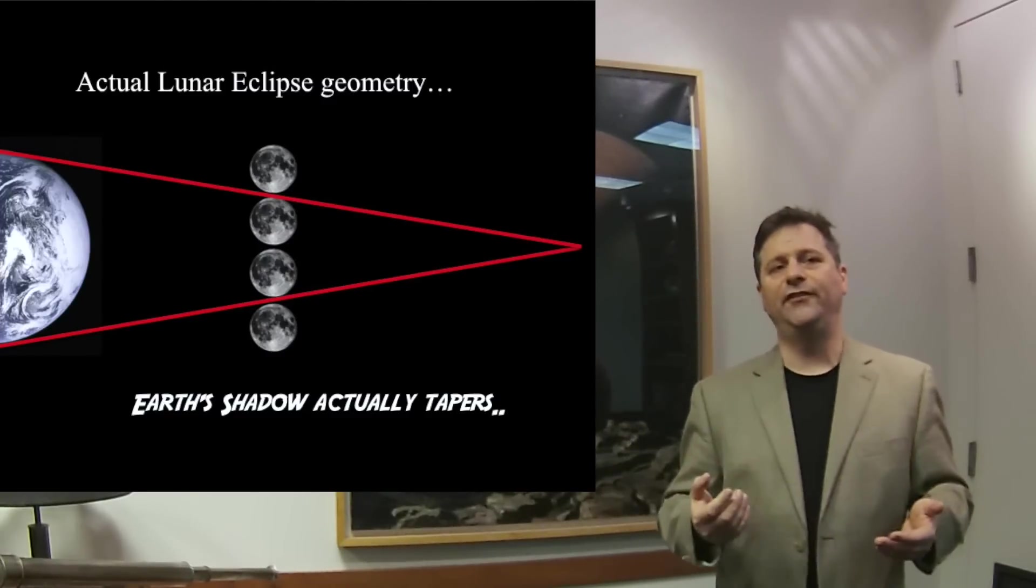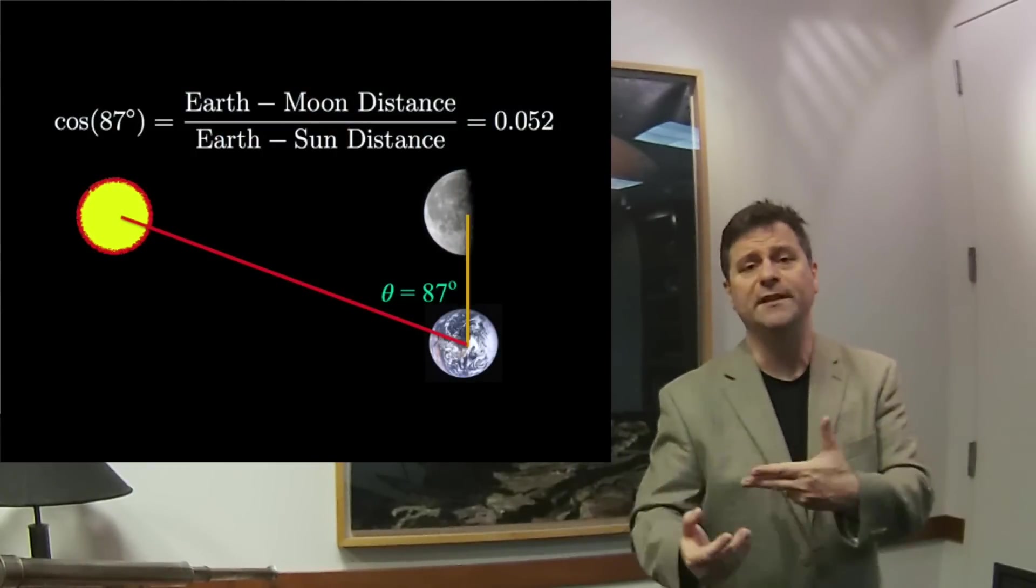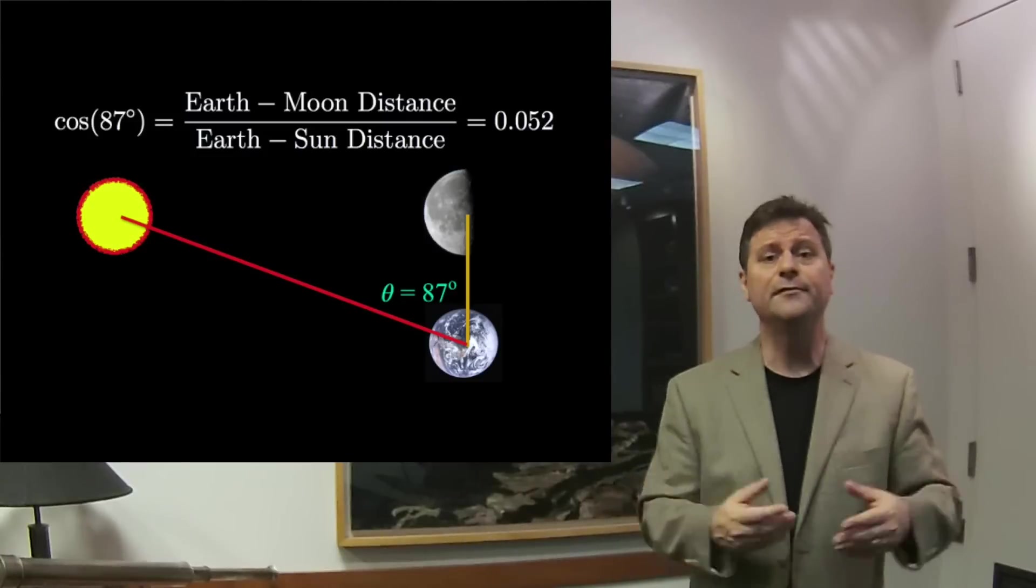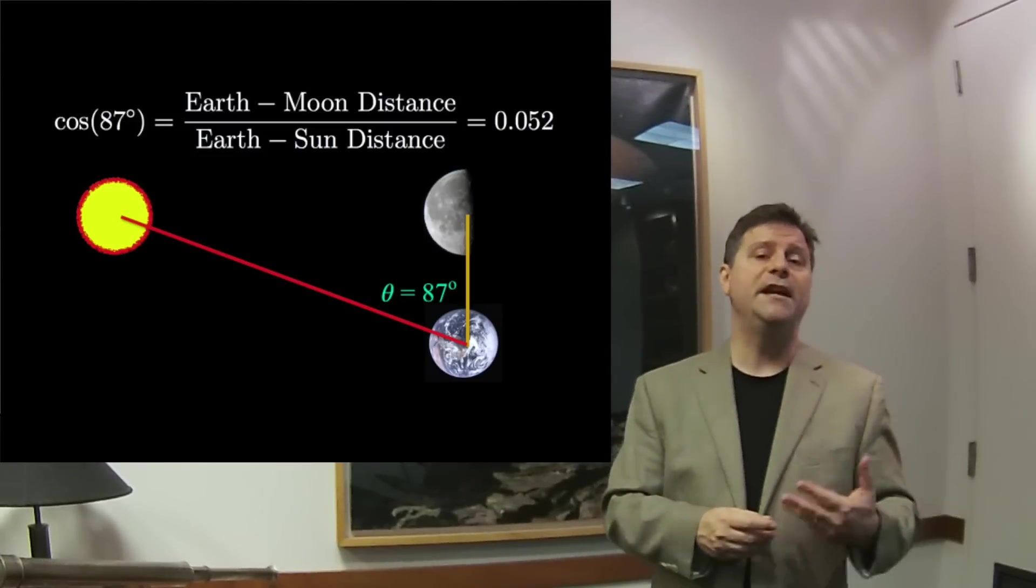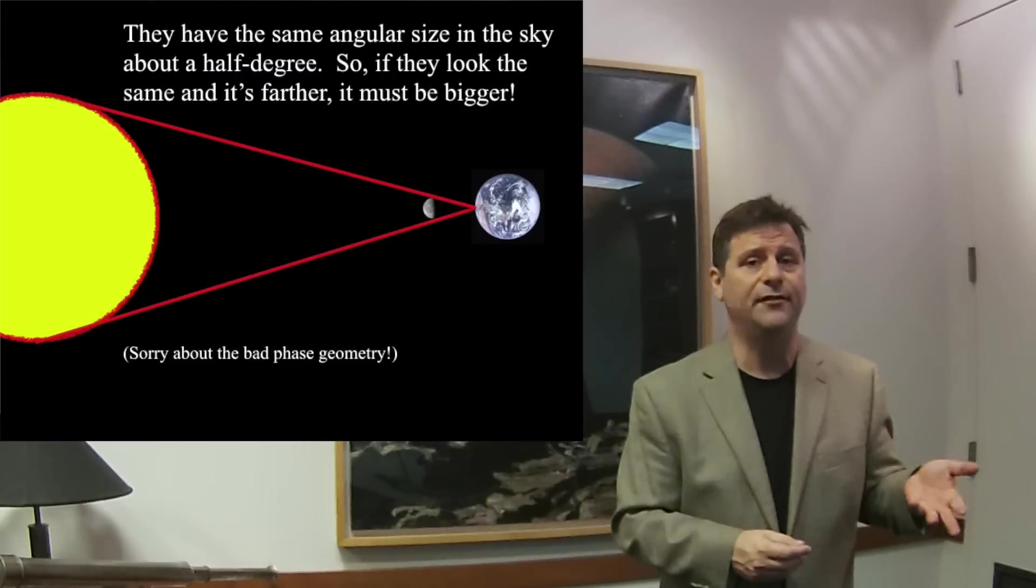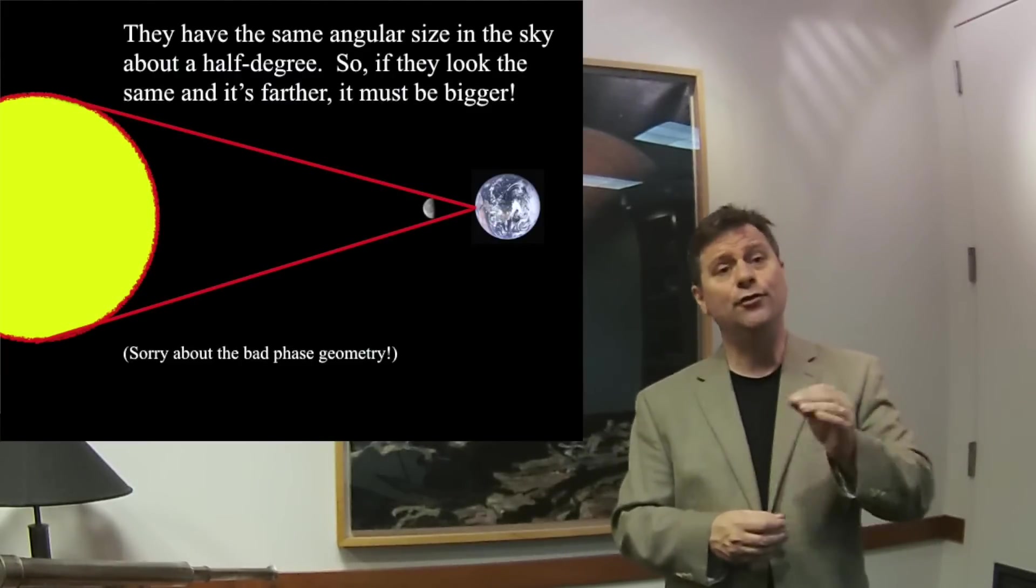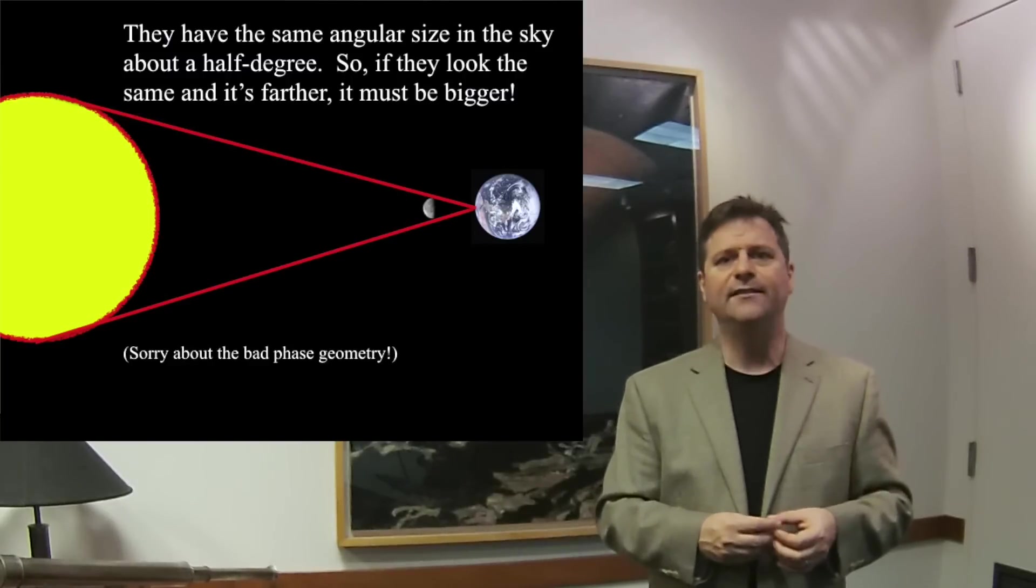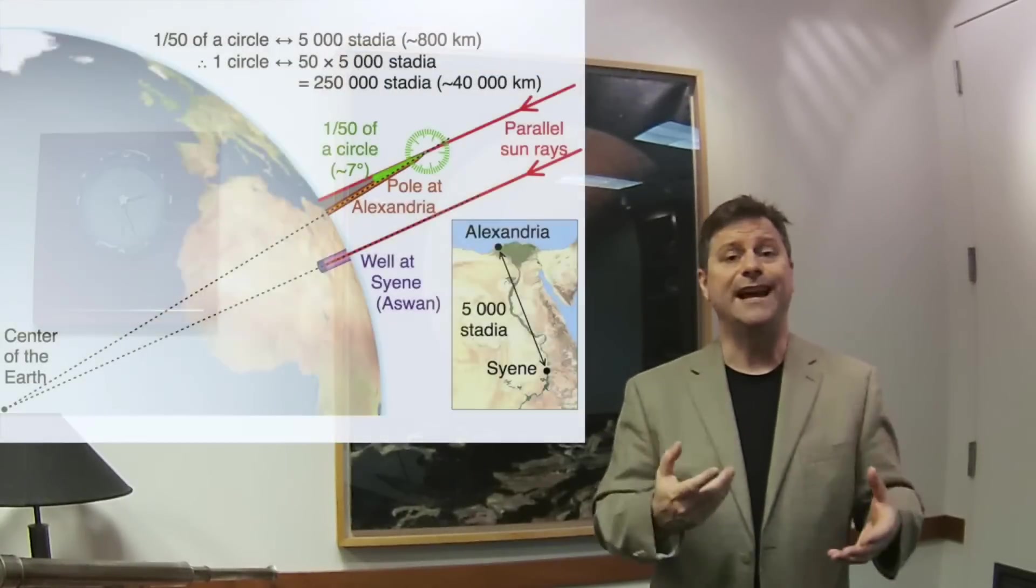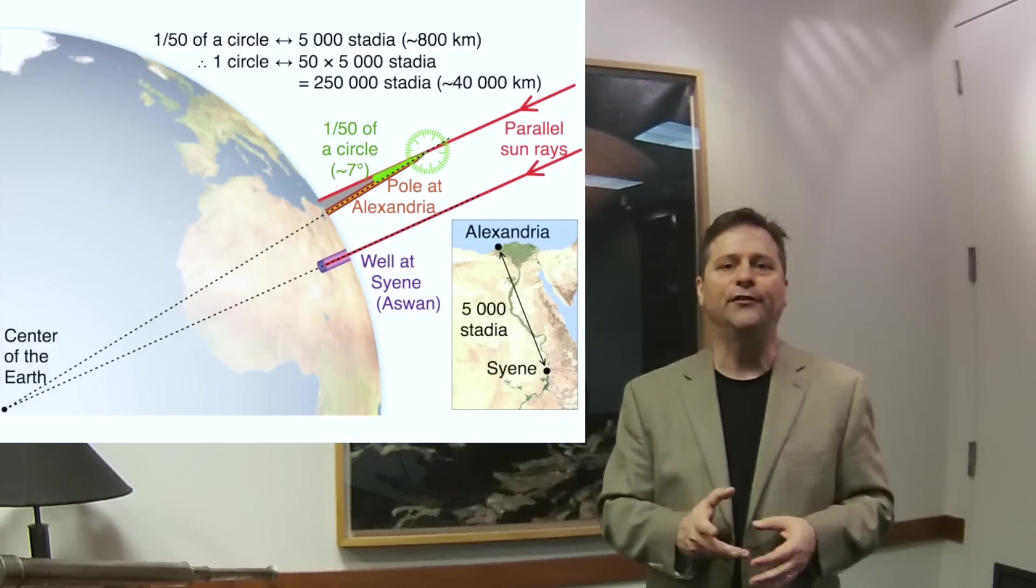So what Aristarchus did is he used angles between the moon and the sun, and he determined they were the same angular size. So he determined that the sun was much further than the moon. He also determined the size of the sun based upon the size that he thought the moon was based on how long it took to go through the lunar eclipse. And you could even use Aristarchus' description of the size of the earth in order to get the relative sizes of all of them. So that's really interesting.